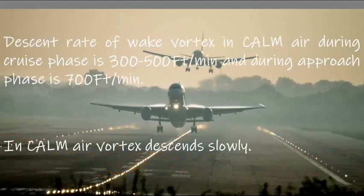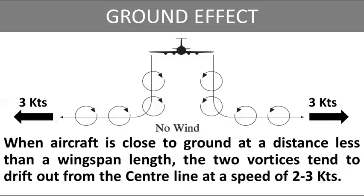The descent rate of wake vortices in calm air is 300 to 500 feet per minute during cruise phases and 700 feet per minute during approach phases. In calm air, the vortex descends slowly. When an aircraft is close to the ground at a distance less than one wingspan length, the two vortices tend to drift out from the centerline at a speed of two to three knots, which is how they decay or fade out in calm wind conditions.